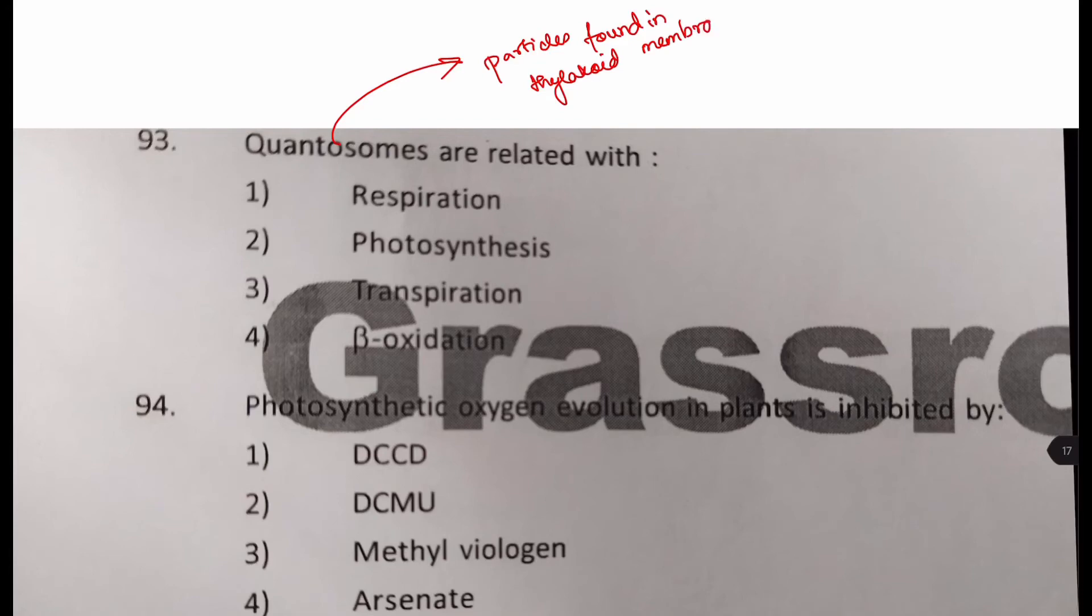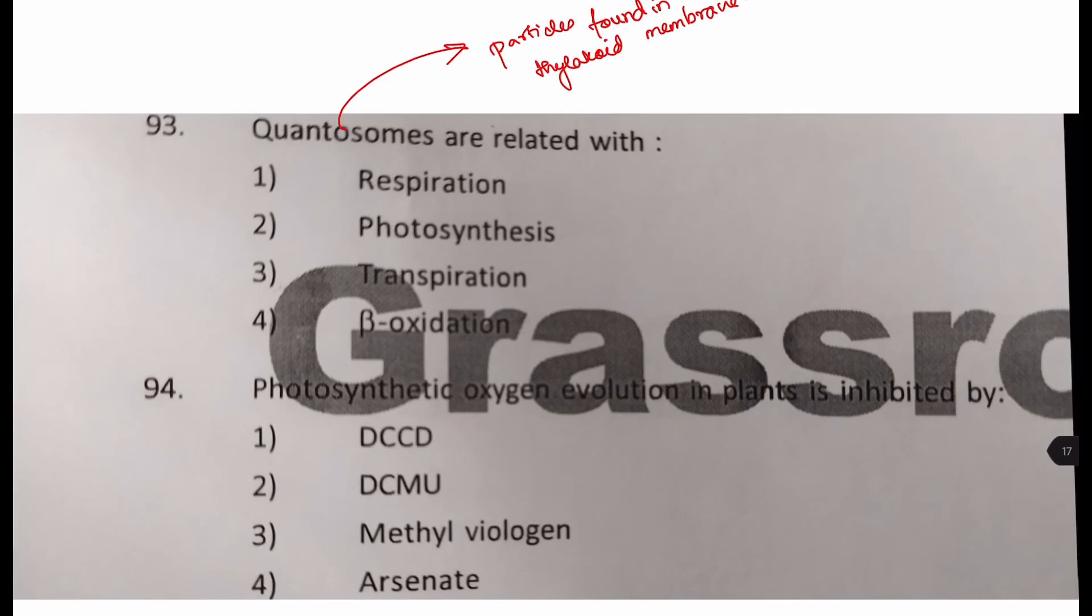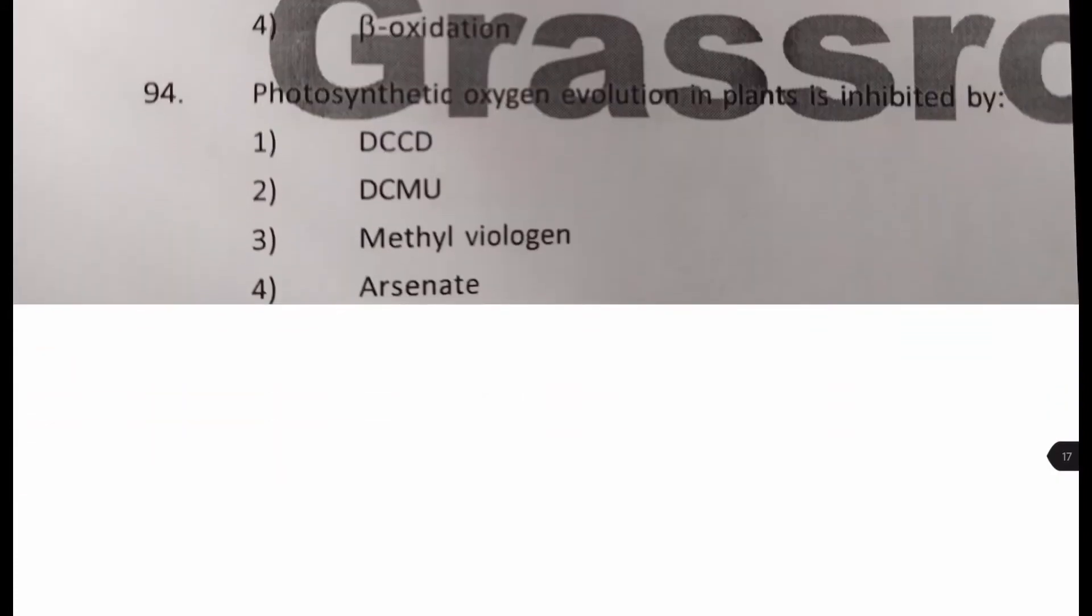They are composed of lipids and proteins that include various photosynthetic pigments and redox carriers. Basically, since they are present in the thylakoid membrane, and so they are associated with photosynthesis. Our answer is number two. Next question.